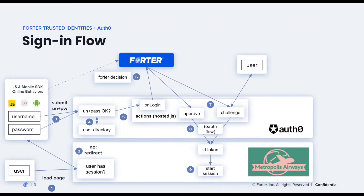Here's an overview of how the solution works. The sample application that we're using here is Metropolis Airways. First, the user visits the Metropolis Airways web application. The application checks to see whether the user has a session. If the user does not have a session, the application redirects the user to Auth0. The Auth0 hosted login page contains the Fortr JavaScript snippet, which collects data about the user's context and behavior. In step three, the user submits their username and password along with a Fortr token to Auth0. Auth0 checks the username and password, and if everything checks out, then it sends a login success event to the Auth0 action engine.